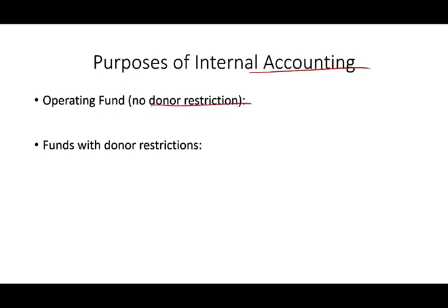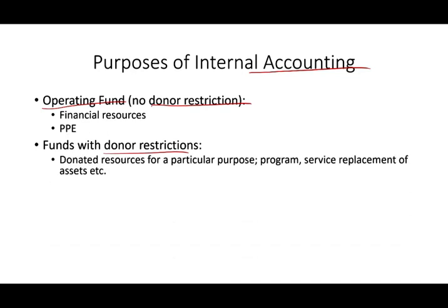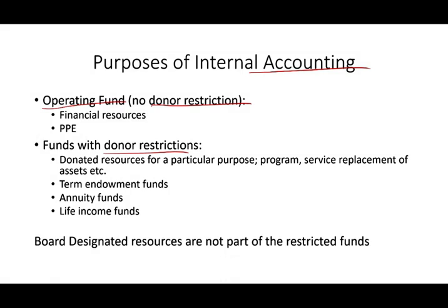For purposes of internal accounting, you could have funds with donor restrictions and funds without donor restrictions. An operating fund with no donor restriction covers financial resources and property, plant, and equipment. For funds with donor restrictions, you have donated resources for a particular purpose — program, service, replacement of assets. This also includes term endowment funds, annuity funds, and life income funds. Bear in mind that board-designated resources are not part of the restricted funds.